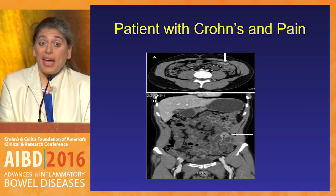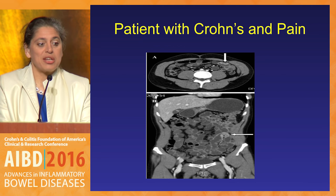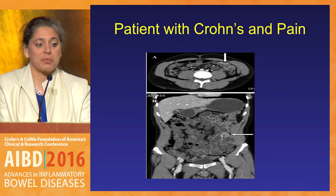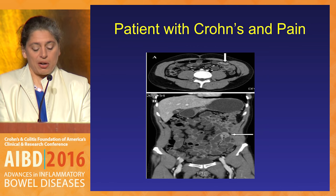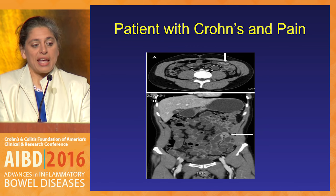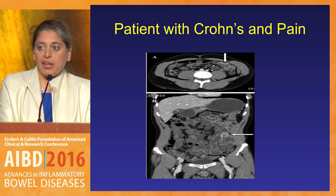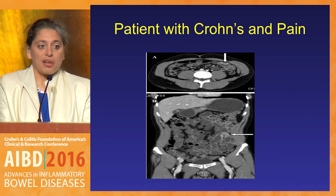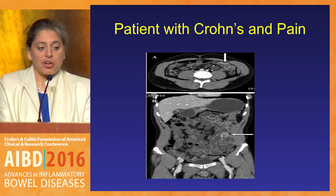Don't forget that your patients with IBD can also have another condition. This was a patient with established Crohn's and abdominal pain. On cross-sectional imaging there is a strange-looking mass in the left lower quadrant — it turns out this is carcinoid. The patient had Crohn's and developed worsening diarrhea, and it was carcinoid.